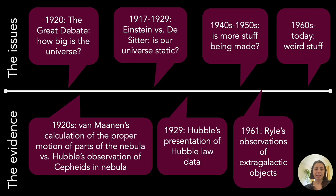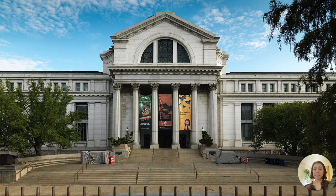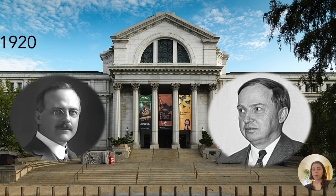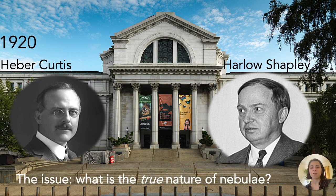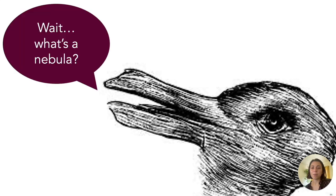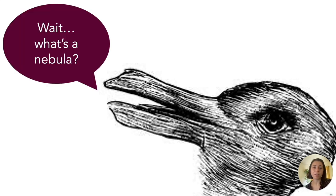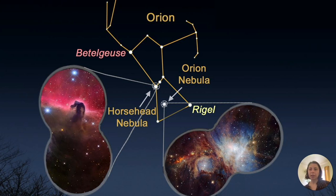Let's start with the Great Debate in 1920. The stage is the Smithsonian Museum of Natural History, and the year is 1920. We have two main figures: Herbert Curtis and Harlow Shapley — so the debate is often called the Curtis-Shapley debate. The issue they're tackling is: what is the true nature of nebula? Now, if you've ever spotted the Orion constellation in the sky, it has the belt containing what's called the Horsehead Nebula, and inside the bottom part there's the Orion Nebula.